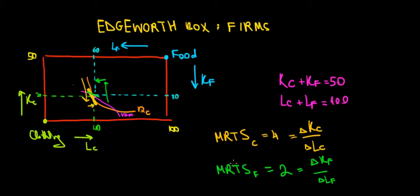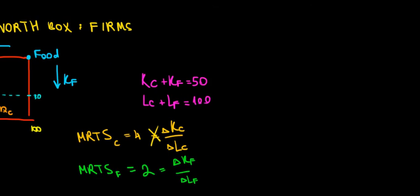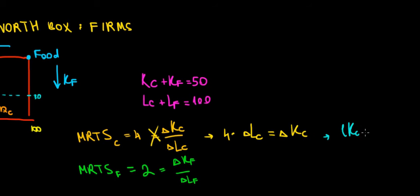This is very analogous to how we did it in the case of the consumer. If we do a cross product for the clothing company, we get: 4 times the change in labor of the clothing company equals the change in capital of the clothing company. Assuming we exchange one unit of capital, the change in labor should be one over four units — meaning one unit of capital is worth one quarter unit of labor for the clothing company. The clothing company values labor more relative to capital at that specific point because it's willing to exchange much less of it.